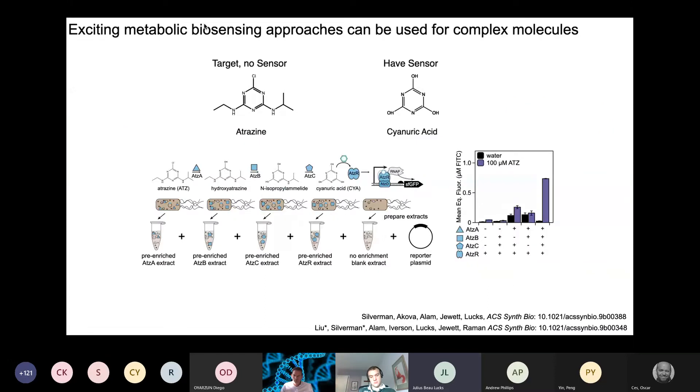Just as a side note, if you don't have a transcription factor that senses what you want to, in collaboration with the Jewett Lab, we've been trying to figure out how you can couple to different enzymatic cascades that might break down the compound that you care about into something that you can. Here's a nice example of a three-enzyme cascade that breaks down atrazine, which is a harmful herbicide, into cyanuric acid, which can be sensed directly by a transcription factor. And so this is just a nice thread that we think there's a lot of potential here for expanding the capabilities and could be interesting to think about from a synthetic cell perspective as well.